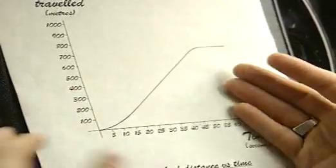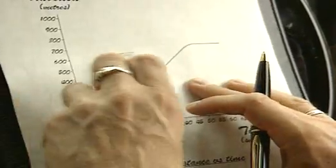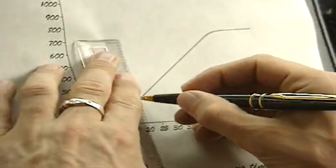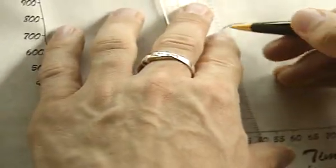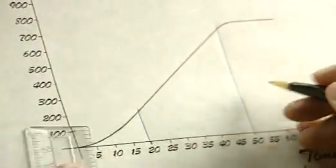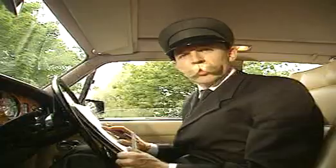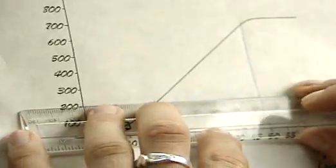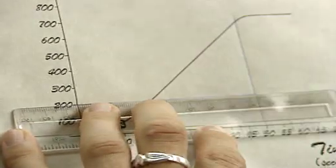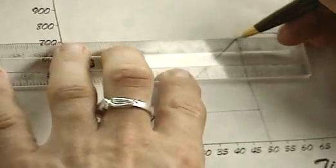What if I wanted to work out my constant speed? Well, that's this straight line here. All I do is draw a line from the beginning down to the time axis. That's the beginning of my constant speed. And then my constant speed ends around about there — I'll draw another line down. That gives me my time during my constant speed, which is 50 minus 20 — that's 30 seconds, which is half a minute. To find out how far I travel at constant speed, I draw another line across — it goes to 200 — and another line across: 700.